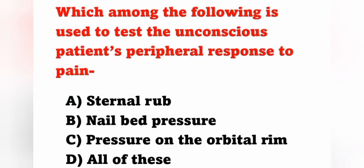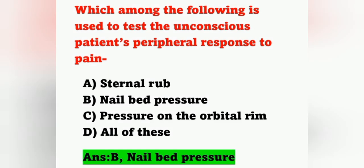Next question: Which among the following is used to test the unconscious patient's peripheral response to pain? Options: option A, sternal rub; option B, nail butt pressure; option C, pressure on the orbital rim; option D, all of these. To check the unconscious patient's peripheral response to pain, nail butt pressure is used. Option B is the correct answer.